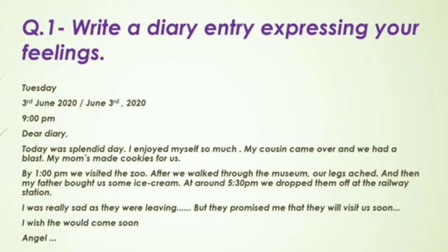First we need to mention the day, then the time, and the date as well, then 'Dear Diary.' So let's see — it's Tuesday, 3rd June 2020, or June 3rd 2020. In both of these patterns you can write down the date. Next is the time. Then on the next line write 'Dear Diary,' give a comma, then start.